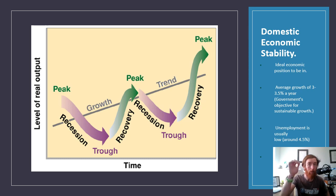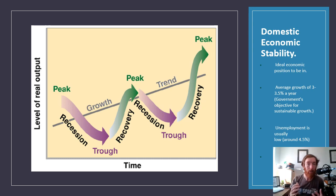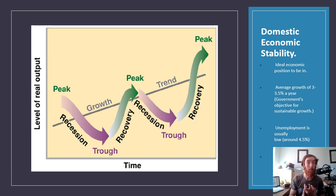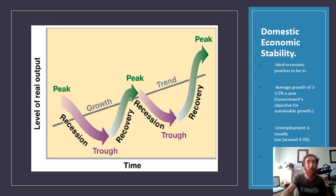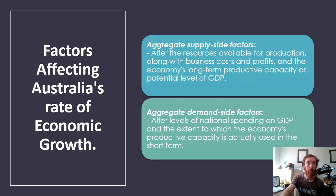In domestic economic stability, unemployment is usually low around 4.5%, and inflation is within the goal range of 2 to 3%. It's the ideal position because when those three things are satisfied, the economy is growing at the correct rate — prices aren't too high, people have more purchasing power and better living standards, people aren't unemployed, and goods and services are actually available to everyone.